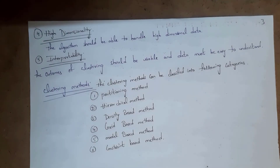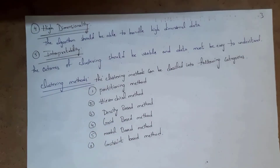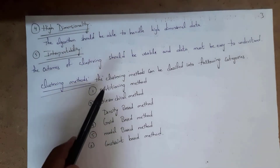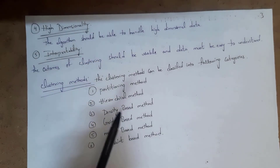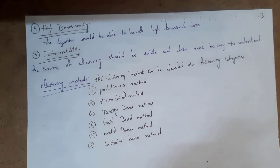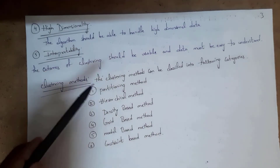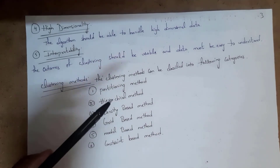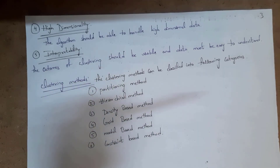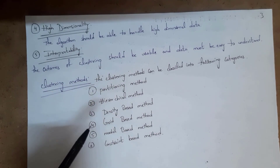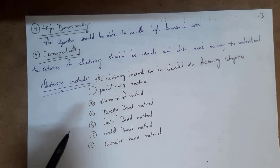The fifth property is interpretability, meaning whatever clustering algorithm we create should be useful and easy to understand. Now let us discuss clustering methods. Clustering methods are classified into six categories: partitioning method, hierarchical method, density-based method, grid-based method, model-based method, and constraint-based method. The last two are not as important, but partitioning, hierarchical, density-based, and grid-based methods are very important.